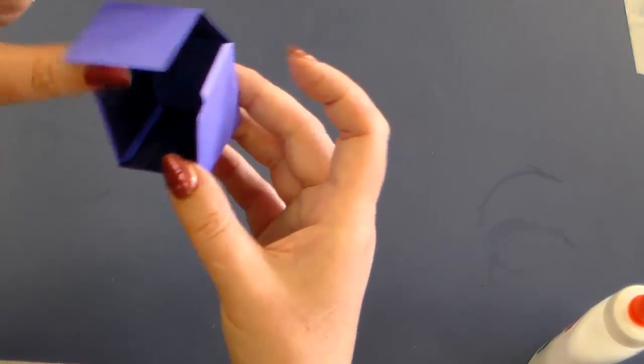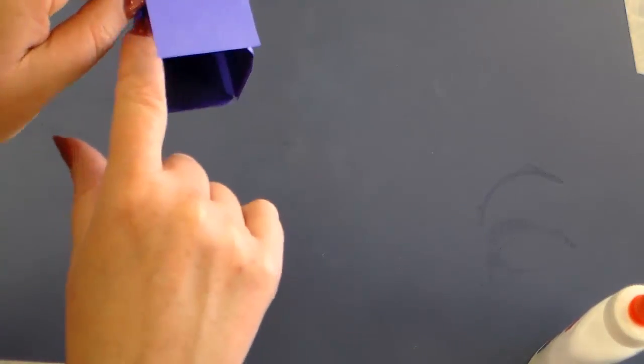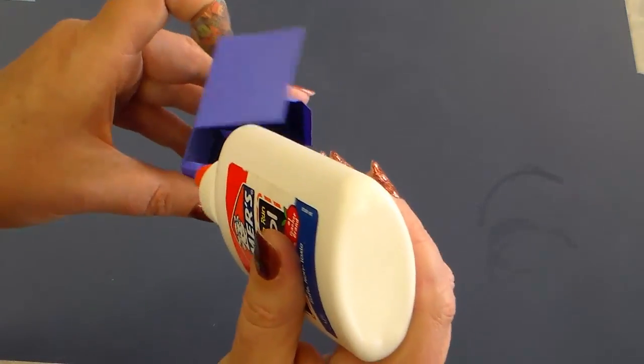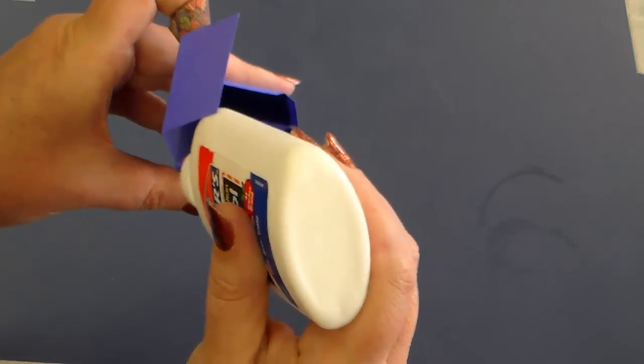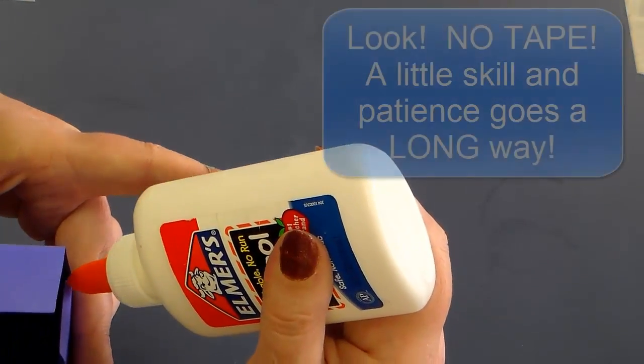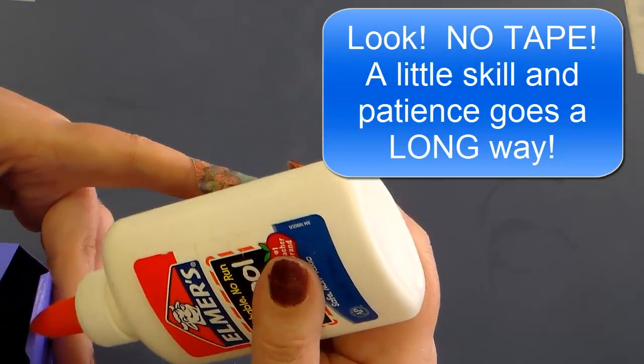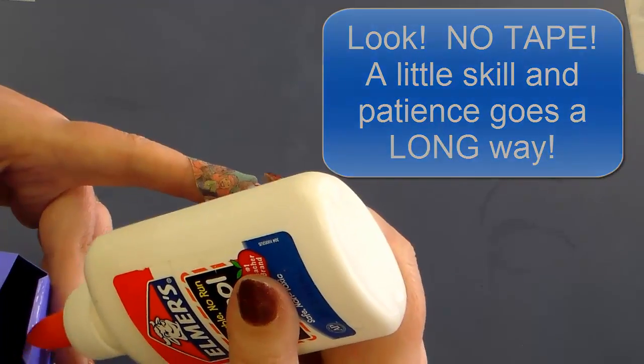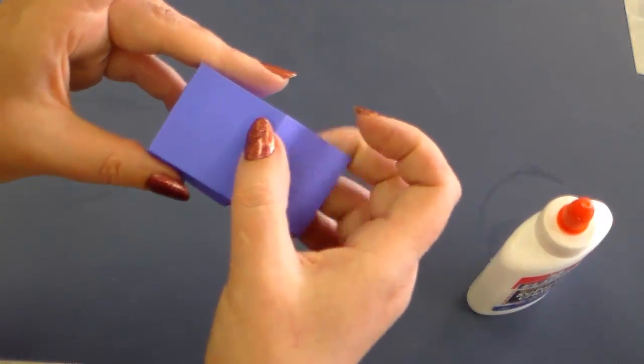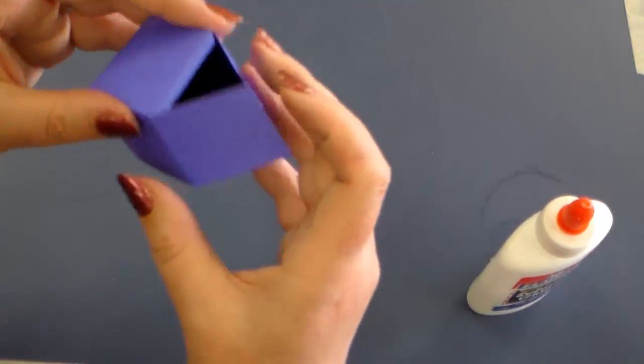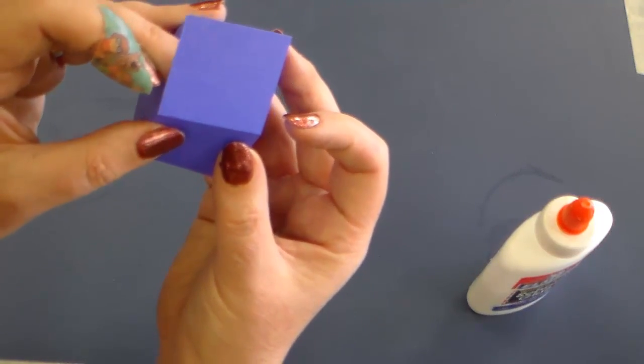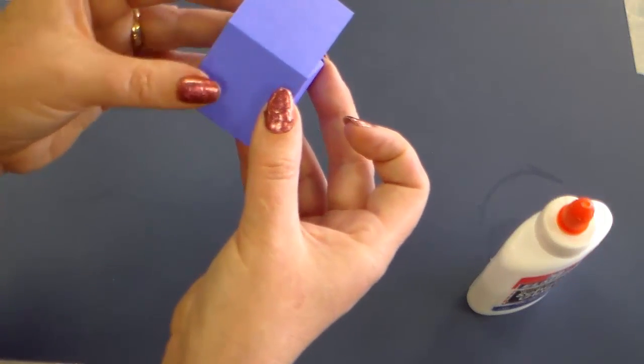So I've got A and B done. My next jobs are C and D. And that's this side. If I do them both at the same time, I should be able to fold this side of my box over. Just like that. Now I'm going to hold this for a little bit.